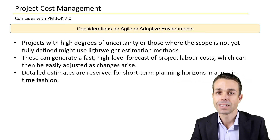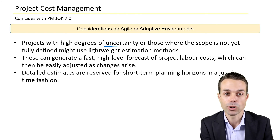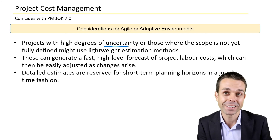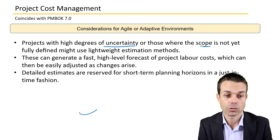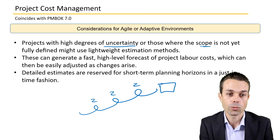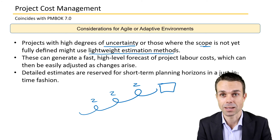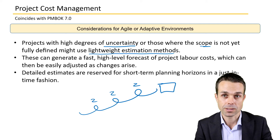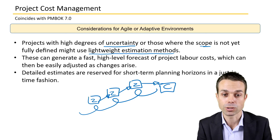For agile and adaptive environments, projects with high degrees of uncertainty — where there could be a lot of change in scope, schedule, or cost, or where scope is not yet fully defined and gets defined over time through iterations — you might use lightweight estimation methods. For example, analogous estimating is easier and faster to do, giving a quick high-level idea that can be adjusted as iterations progress until our final product and final cost baseline is created.